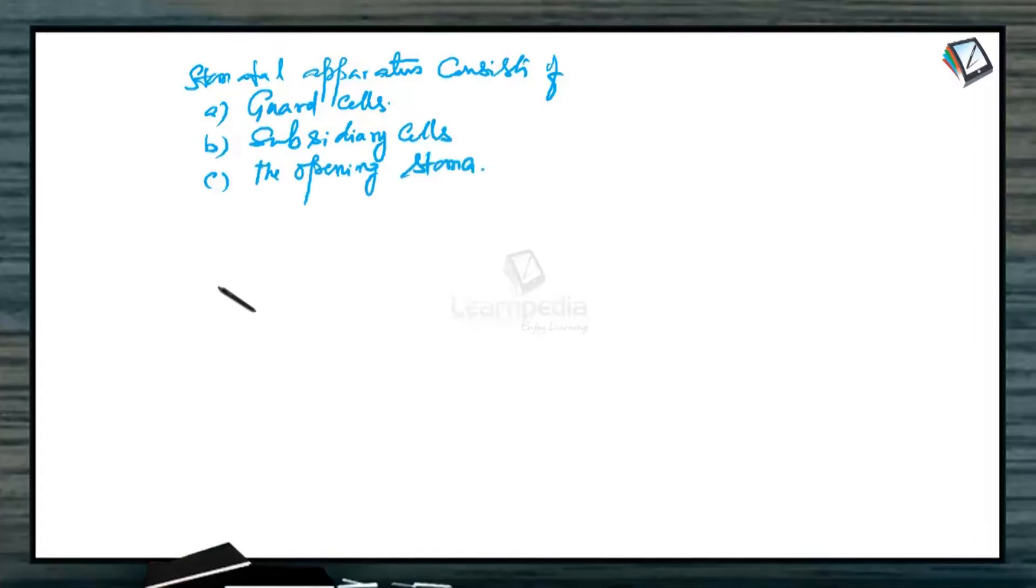To continue with the structure of the Stomatal Apparatus. The Stomatal Apparatus consists of guard cells, subsidiary cells, and the opening stoma. The guard cells are 2 in number, and these guard cells are bean shaped, or kidney shaped, and this is the cell wall.